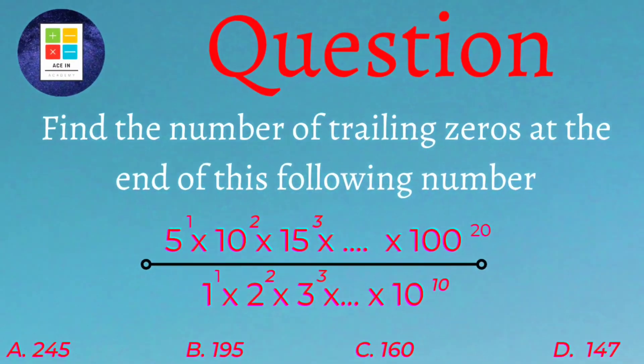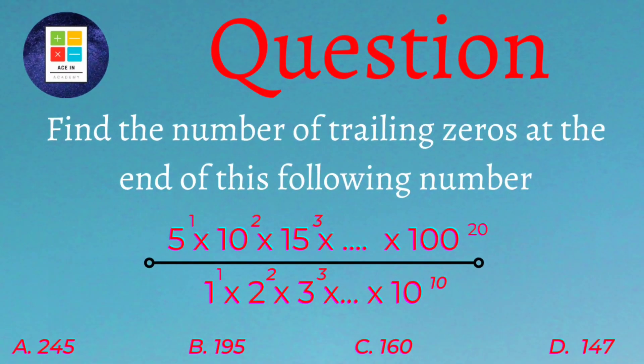The question is as follows: find the number of trailing zeros at the end of the following number — 5 raised to power 1, into 10 squared, into 15 cubed, all the way up to 100 raised to power 20, whole divided by 1 raised to power 1, into 2 squared, into 3 cubed, all the way up to 10 raised to power 10. We are provided four options: option A is 245, option B is 195, option C is 160, and option D is 147.